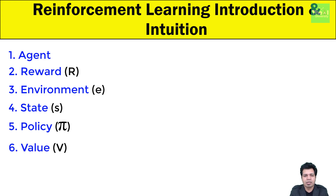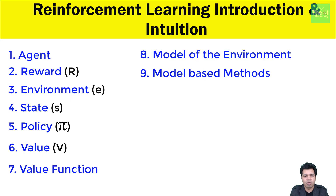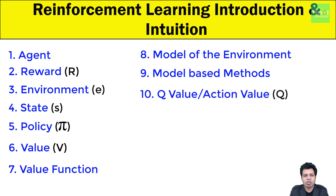Number six is value, denoted by V in uppercase — it depicts the expected long-term return with discount as compared to short-term reward. Number seven is value function — it specifies the value of a state, that is the total amount of reward. Number eight is model of the environment — something which mimics the behavior of the environment and helps make inferences about how a specific environment will behave. Number nine is model-based methods — a method for solving reinforcement learning problems using model-based approaches. Number ten is Q-value or action value, denoted by Q in uppercase — quite similar to value, but takes an additional parameter as a current action.